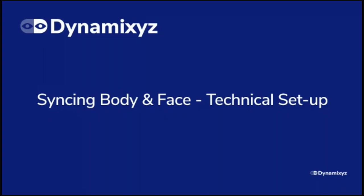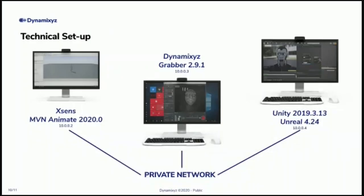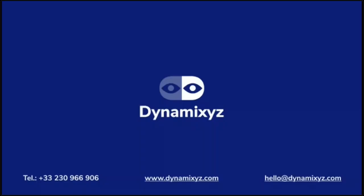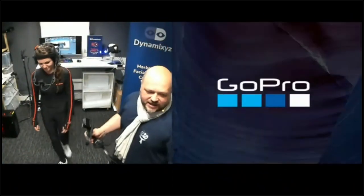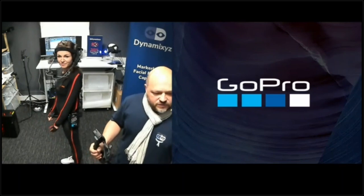Let's go to the technical setup. Today we're using a private LAN network with three computers: one that runs the Xsens MVN Animate system, another for our Grabber, and the third for the real-time engine — Unity and Unreal today. Let's have a look at the hardware we're using.